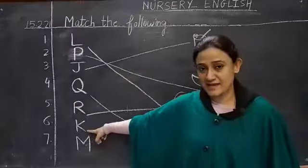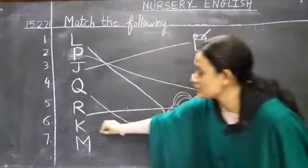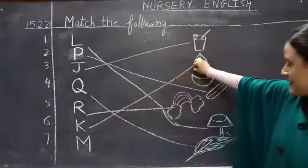Now next alphabet is K. We will match K with kite. K is for kite.